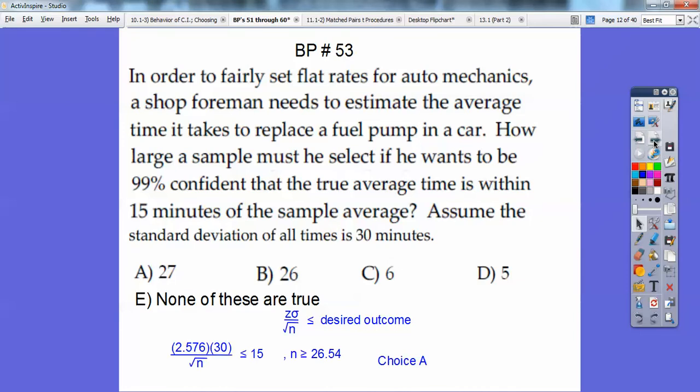So at the 99% confidence interval, my Z score is 2.576, and then we're just going to plug it in. So 30 is my standard deviation divided by the square root of n, less than or equal to 15. So we go ahead and cross multiply and square both sides, and we get 26.54. It has to be greater than that, so it's choice A. Easy enough.